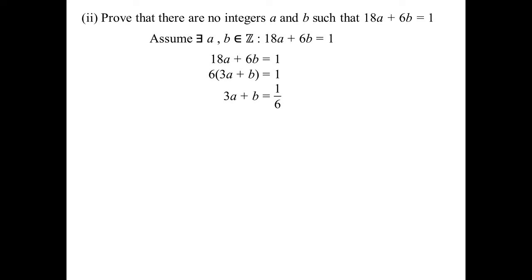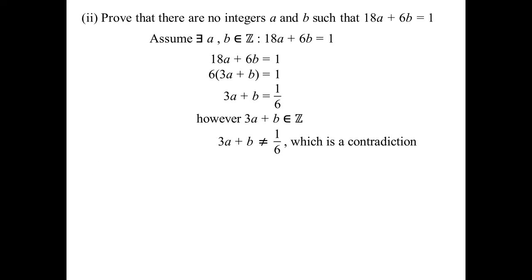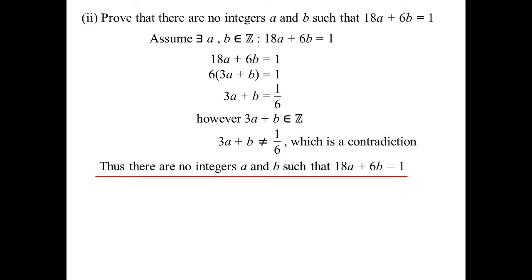Prove there are no integers A and B such that 18A + 6B = 1. Assume that you can — there exist integers A and B such that 18A + 6B = 1. Factorising the 6 out: 3A + B must equal 1/6. But 3A + B has to be an integer — A is an integer, B is an integer, three times an integer is an integer, adding gives an integer. But we're saying it equals 1/6 — that's the contradiction. Therefore, there are no integers A and B such that 18A + 6B = 1.